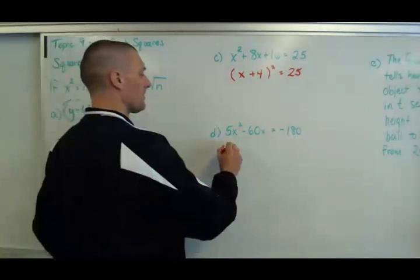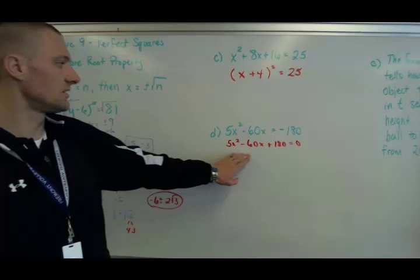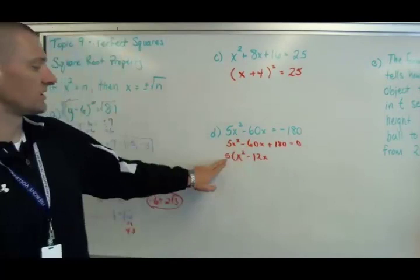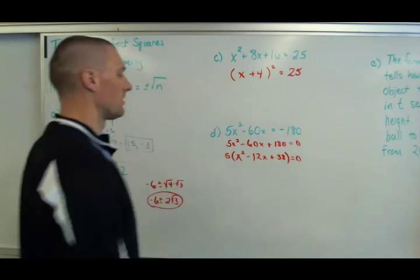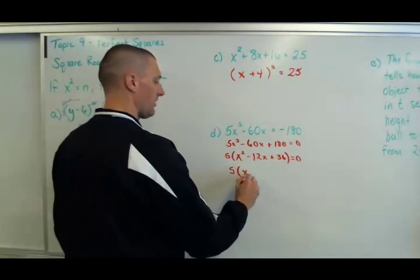Now for d, it's the same basic idea except I've got to get this 180 to the other side. So I've got 5x² - 60x, I'm going to add 180 over to the left-hand side. Now looking at these, this is not an easily factorable problem based on what you know, but they do have a greatest common factor of 5. When you factor that out, remember it becomes a division problem. So 60 ÷ 5 is 12, and 180 ÷ 5 is 36, and you get this. Actually I apologize, that's 36.